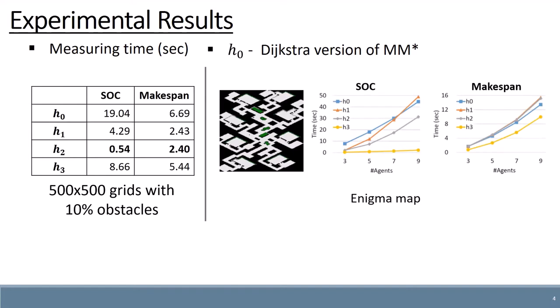We also experimented on a larger grid with many more obstacles called Enigma. Here H3 was the fastest. We showed that MMSTAR always performs better with heuristics and explained the benefits of each of the suggested heuristic functions.